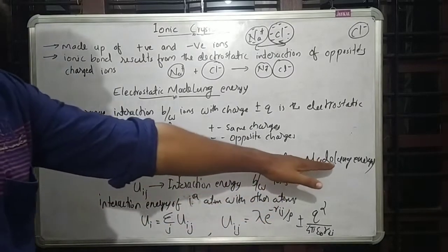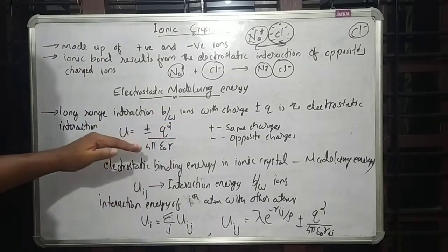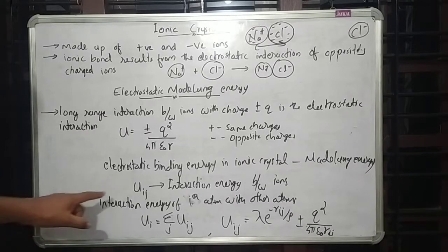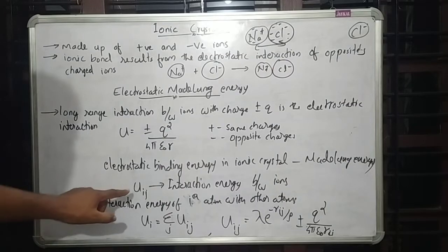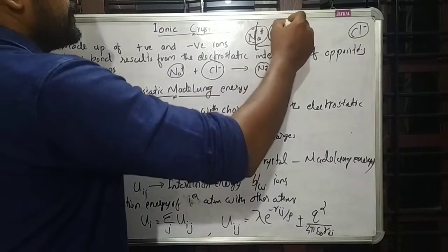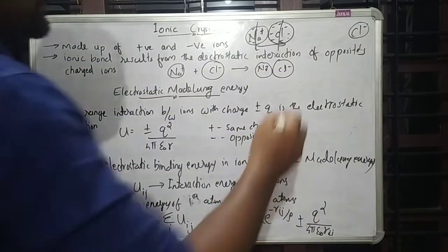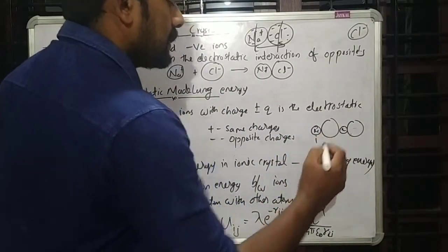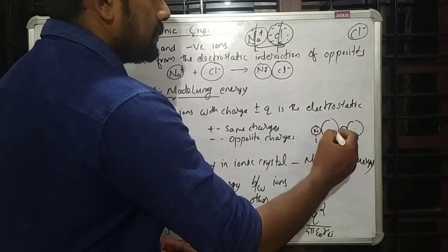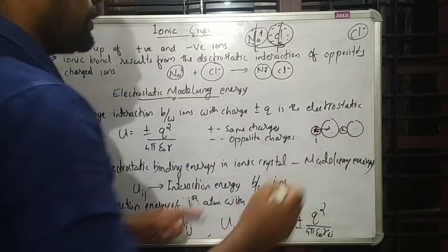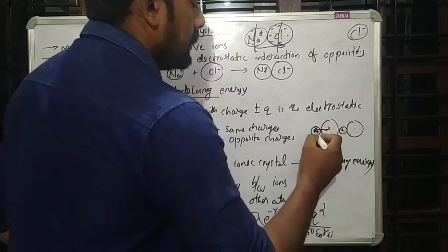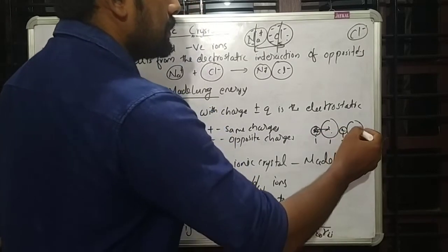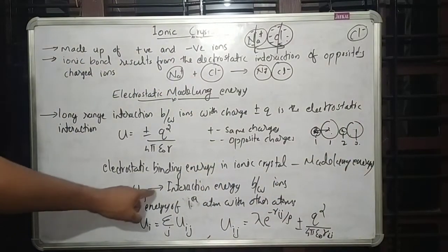The electrostatic binding energy in an ionic crystal is known as Madelung energy. UIJ is the interaction energy between ions i and j. If we consider many ions — sodium, chlorine, sodium, chlorine — and take one as the reference atom i, then UIJ is the interaction energy between atom i and atom j. For example, Ui1, Ui2, Ui3 represent interaction energies between the reference atom and the 1st, 2nd, and 3rd atoms respectively.